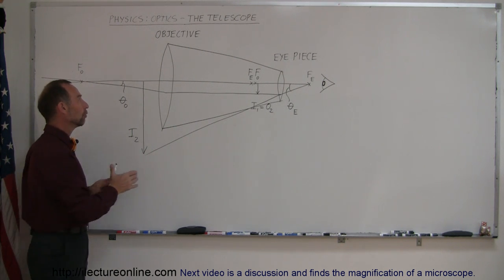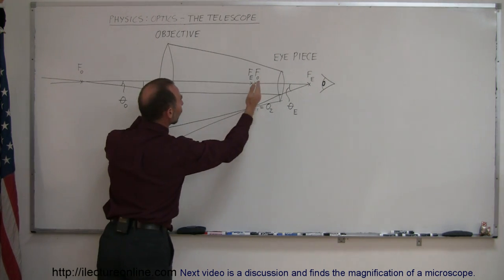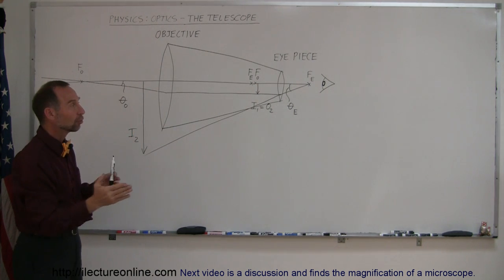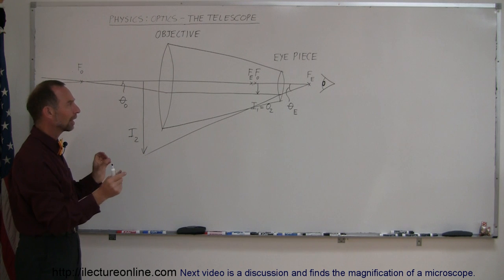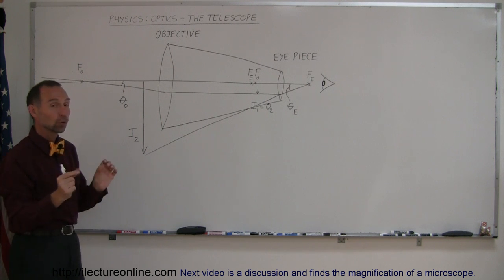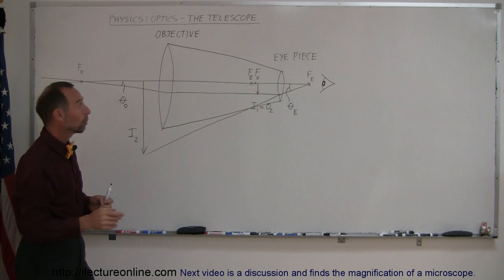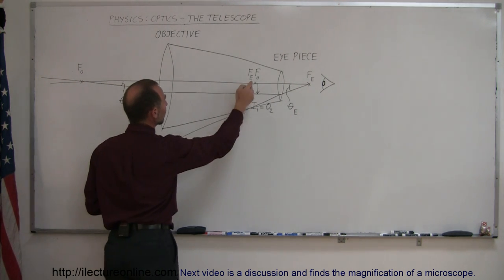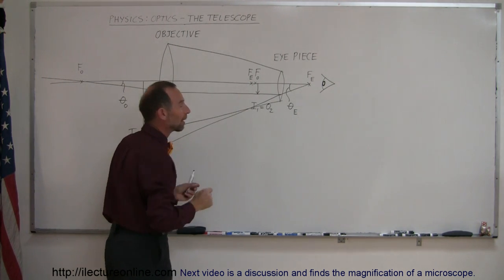For a telescope, the objective lens has a very long focal length and for the eyepiece it is short. In a microscope, both lenses tend to have a short focal length. Also, one requirement for a telescope is that the focal length of the objective must be past the focal length of the eyepiece.